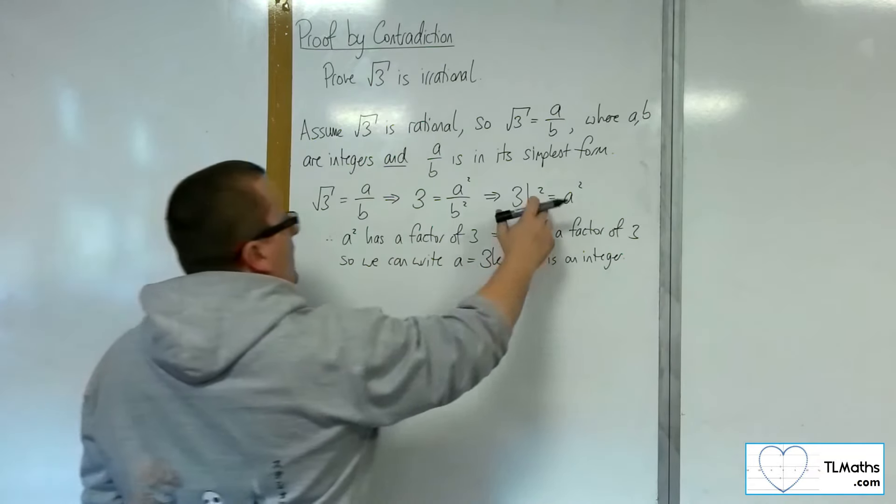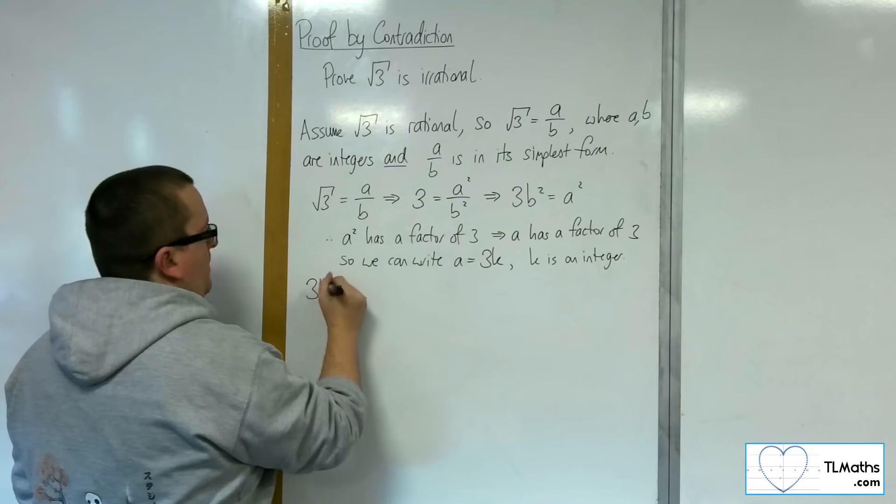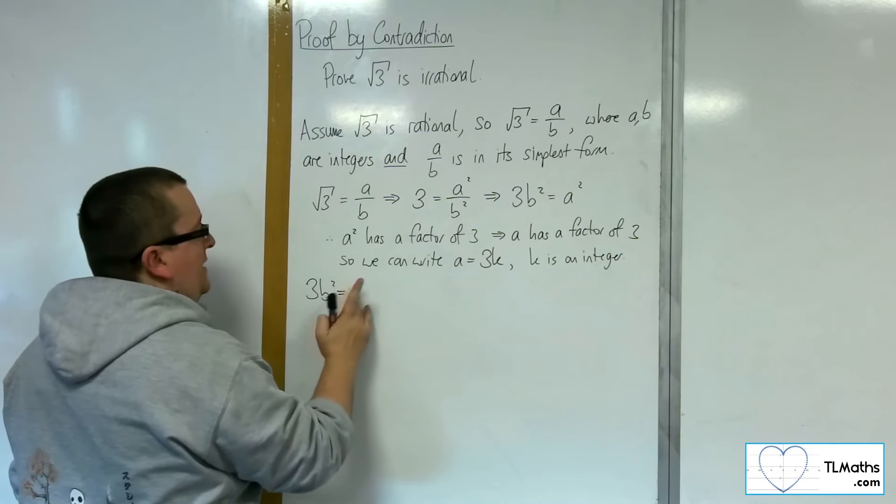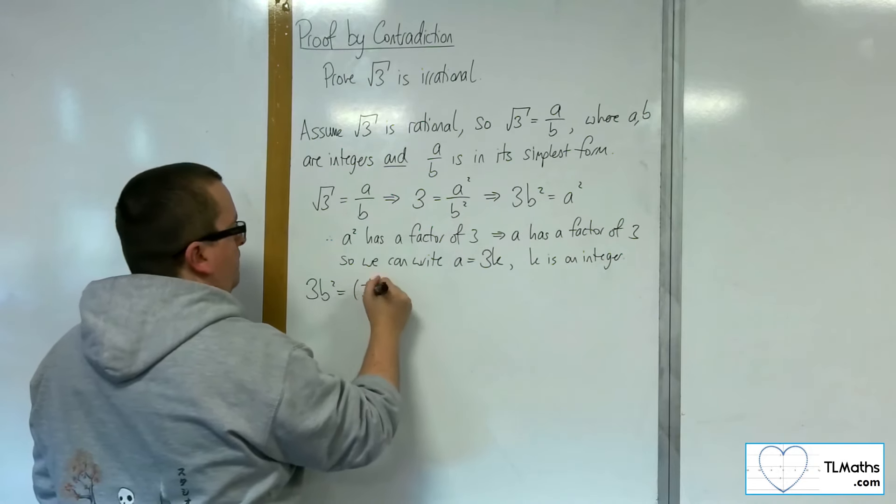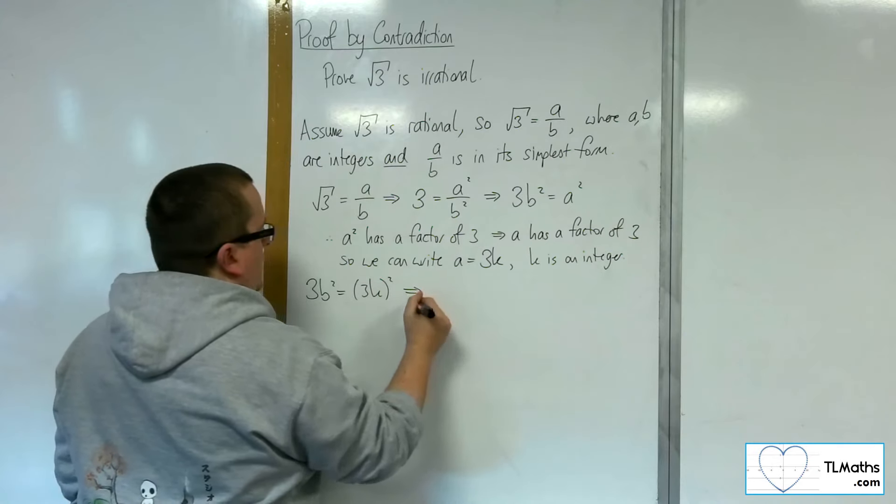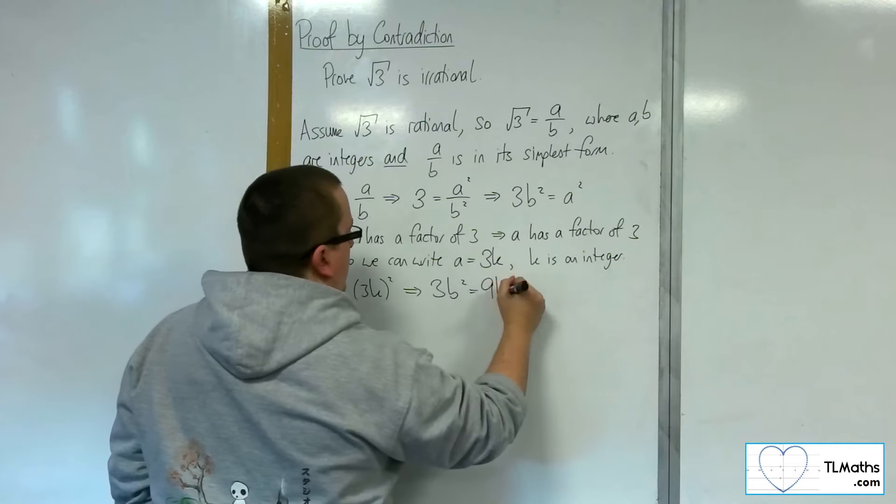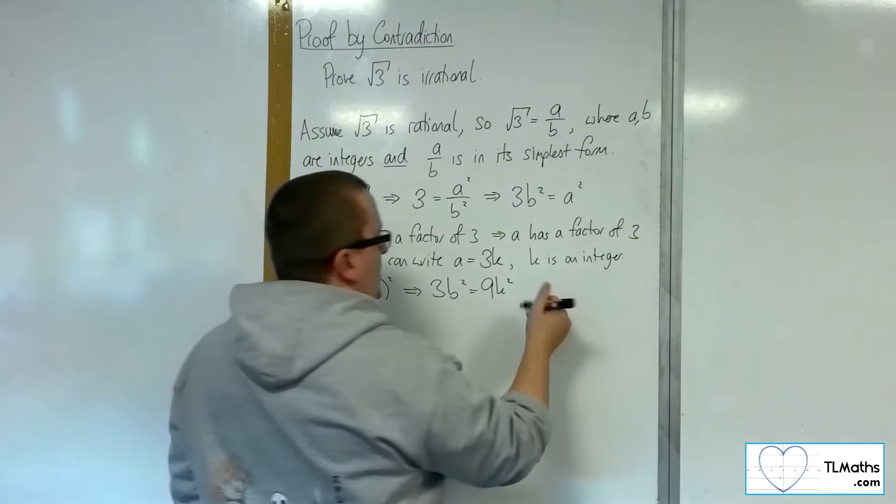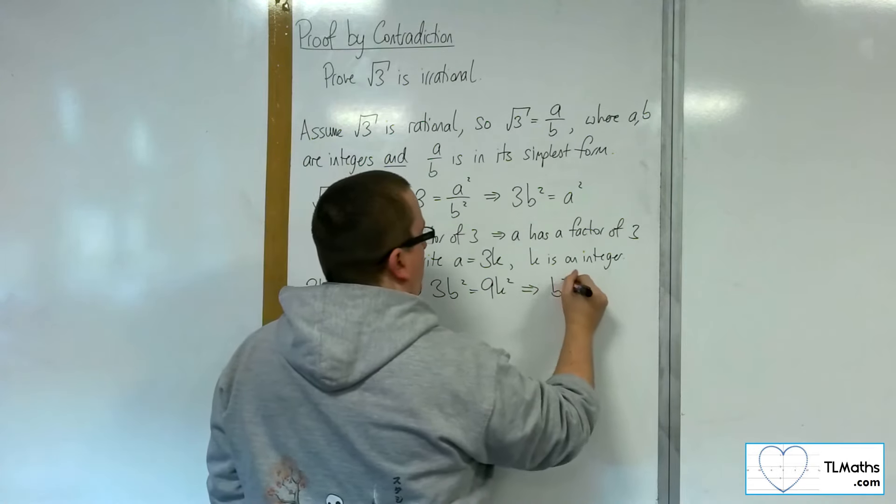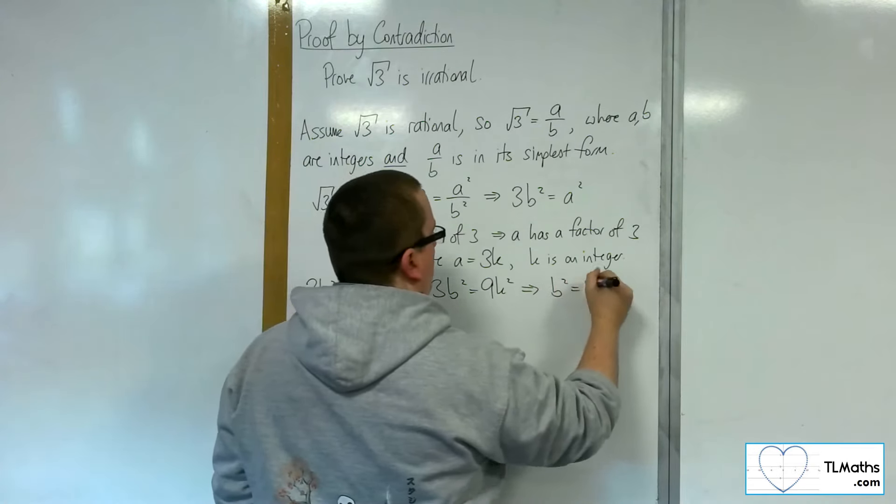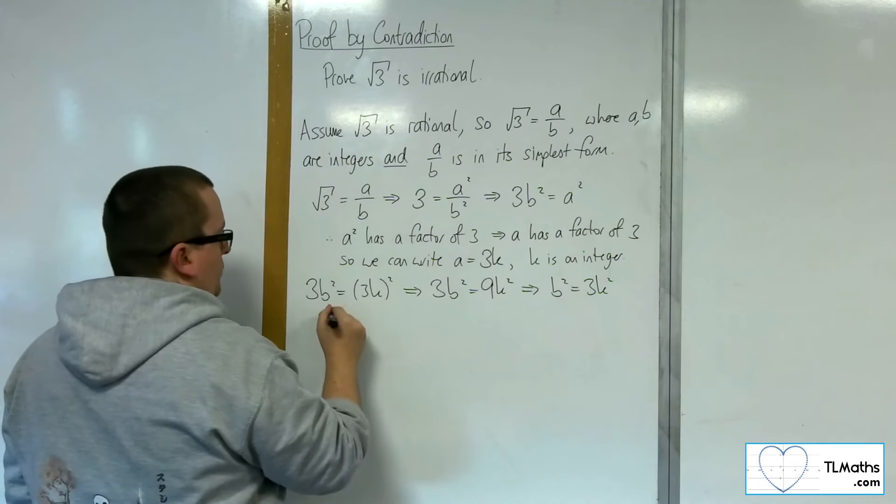If I substitute that in to my equation, 3b squared is equal to a squared, where the a is now 3k. Then expanding that bracket, we've got 3b squared is equal to 9k squared. And then dividing both sides by 3, we get b squared is 3 lots of k squared. Now, that means that b squared also has a factor of 3.